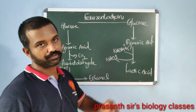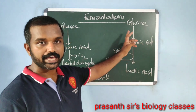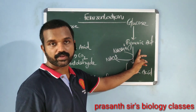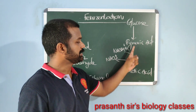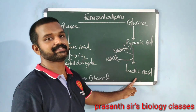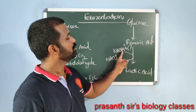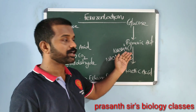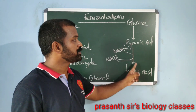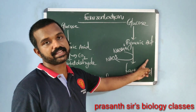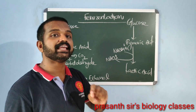In lactic acid fermentation, the first step is also glycolysis — glucose is converted into pyruvic acid. Then pyruvic acid is reduced into lactic acid. The reducing agent is NADH + H⁺, which is converted back to NAD⁺. This step is catalyzed by the enzyme lactate dehydrogenase (LDH).